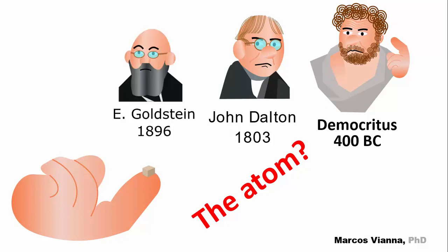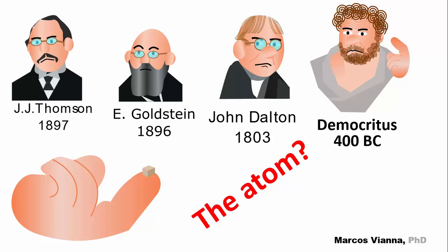Mr. Eugene Goldstein, 1896, was the first to discover anode rays, which helped in the discovery of protons. Sir Joseph John Thomson, 1897, proposed the plum pudding model. Electrons were evenly distributed in a positively charged material that filled the atom.